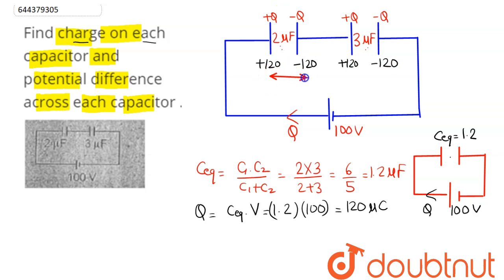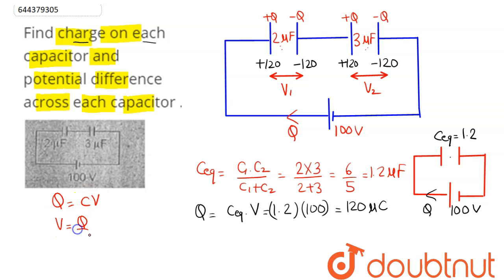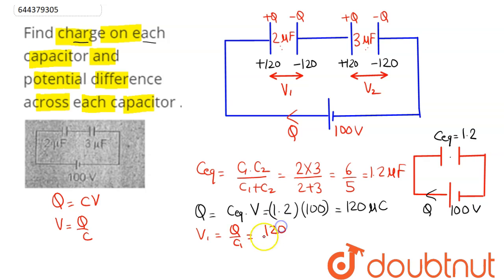Now we need to find the potential difference across each capacitor. Let the potential difference across the 2 microfarad capacitor be V1 and across the 3 microfarad capacitor be V2. Since Q = C × V, we have V = Q/C. So V1 = Q/C1 = 120 microcoulombs divided by 2 microfarads, which comes out to 60 volts.